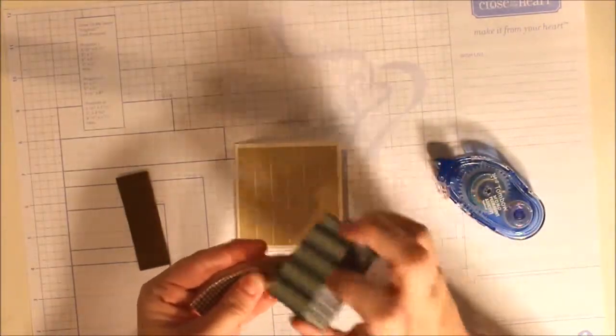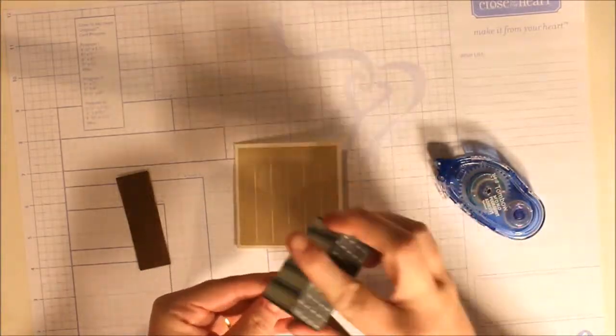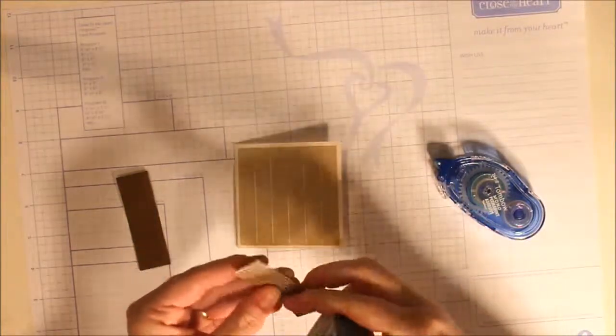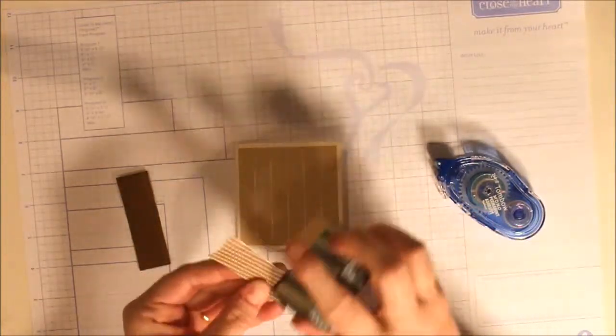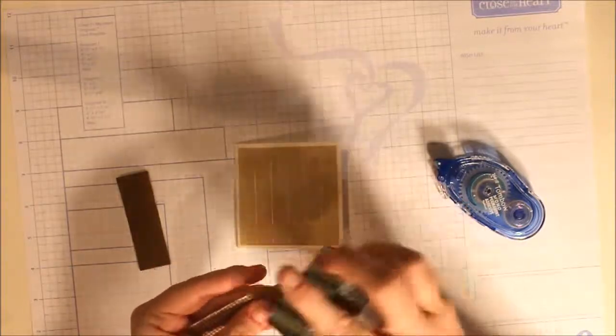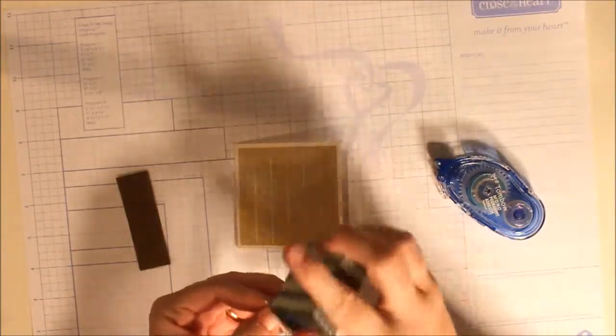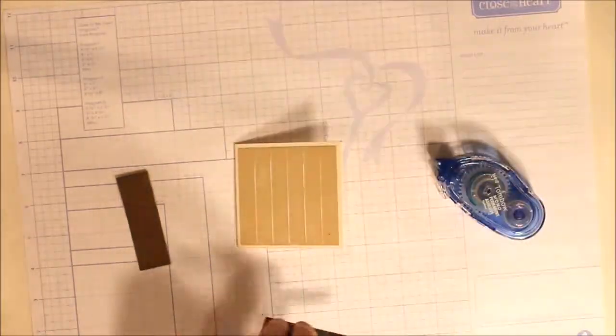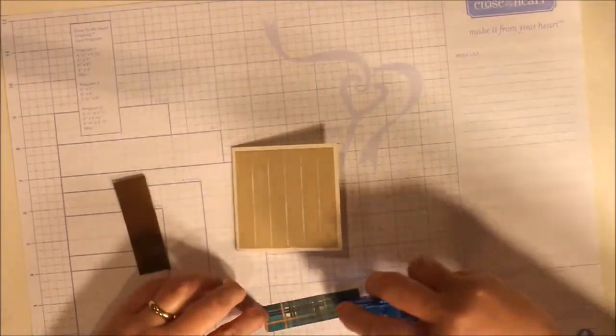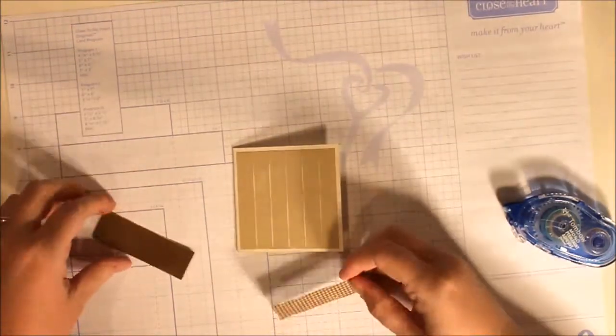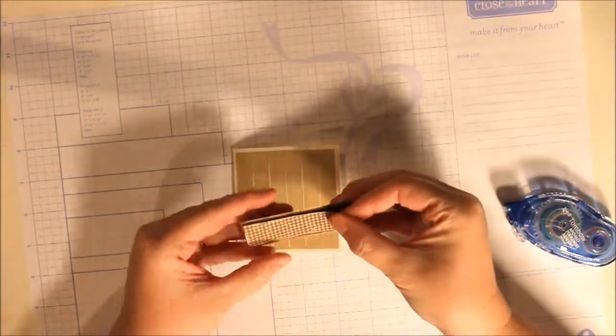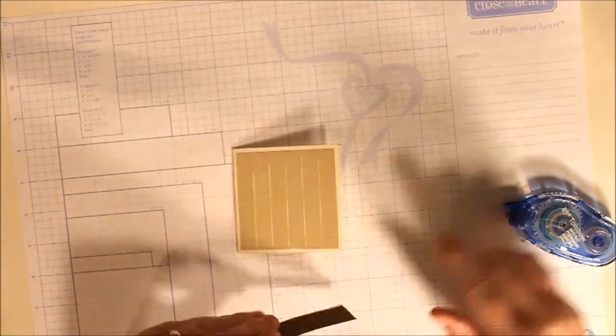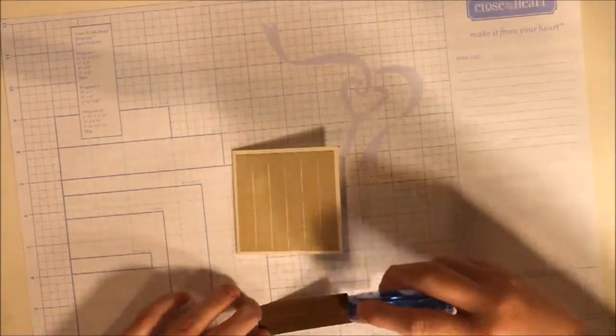And for the houndstooth, I'll go ahead and do all four sides. Go ahead and glue those two pieces together, and then glue them onto the front of the card.